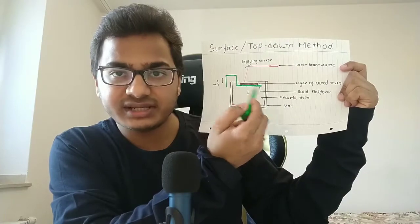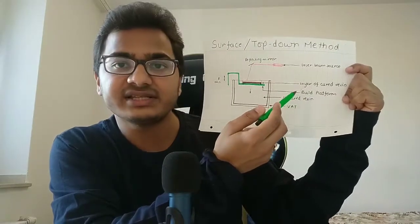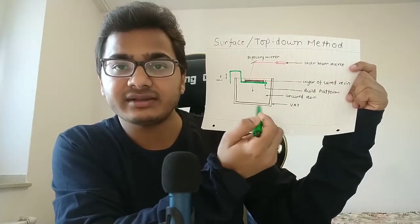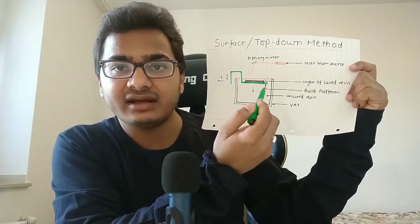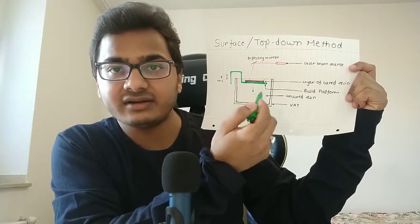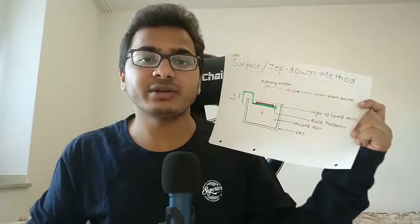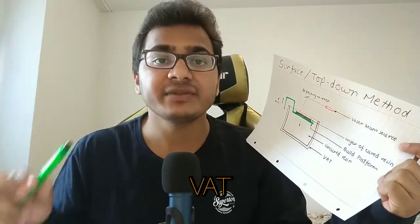The brown portion is the first layer of cured resin. Above that is liquid resin which is yet to be cured. This is the vat, and there's uncured liquid resin filled into this vat.